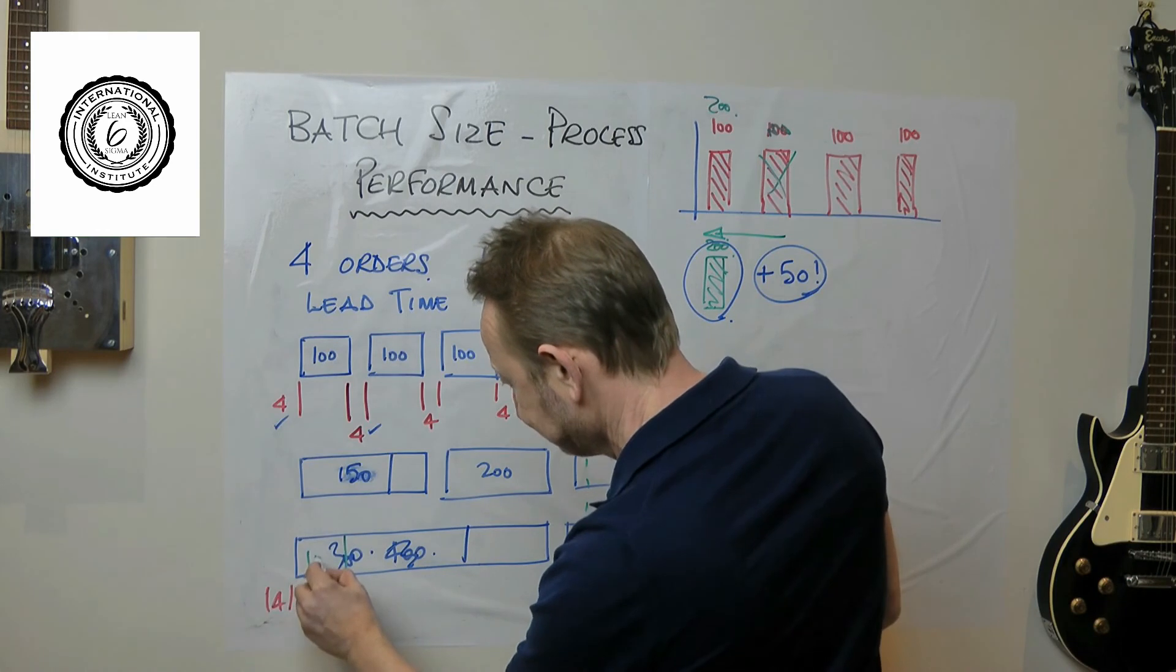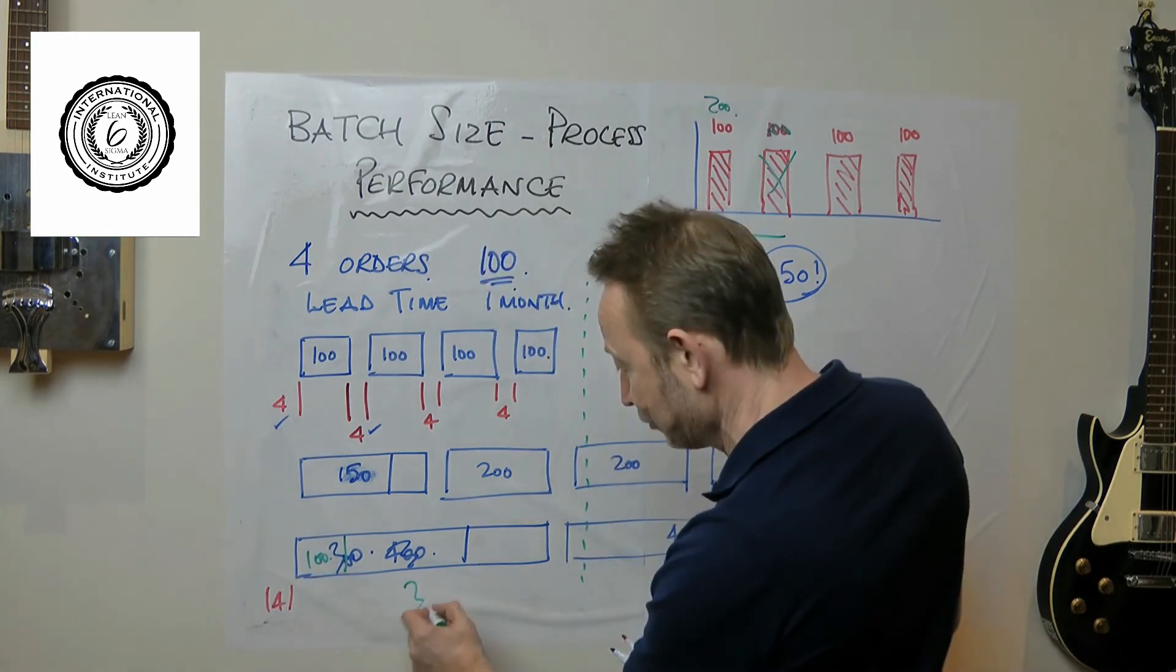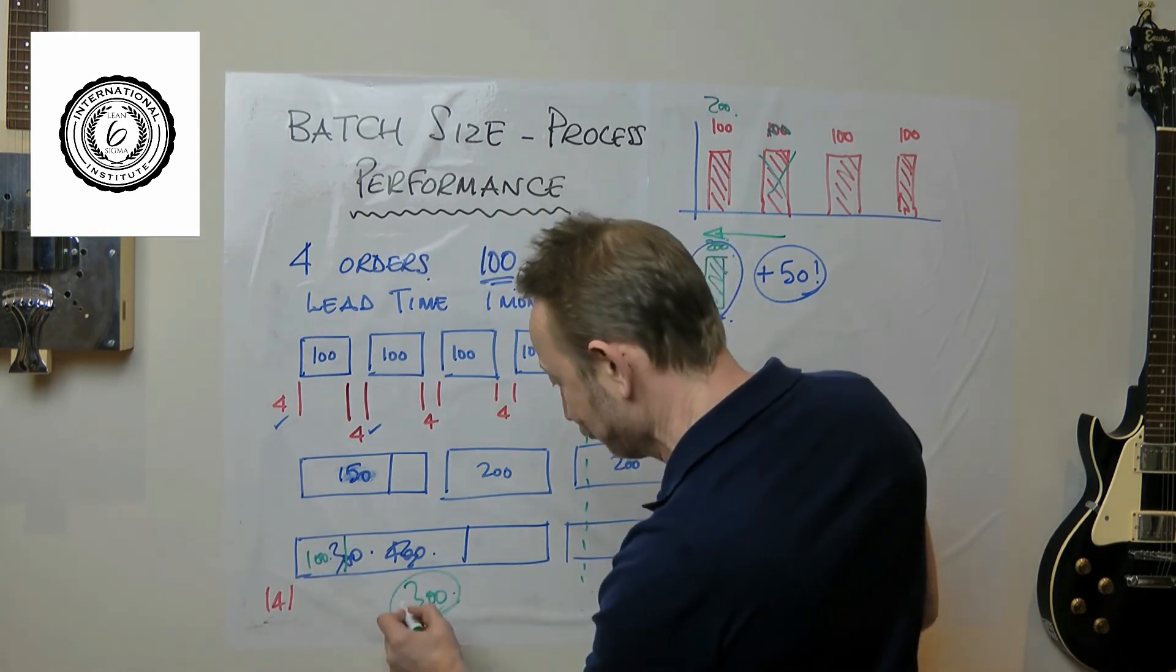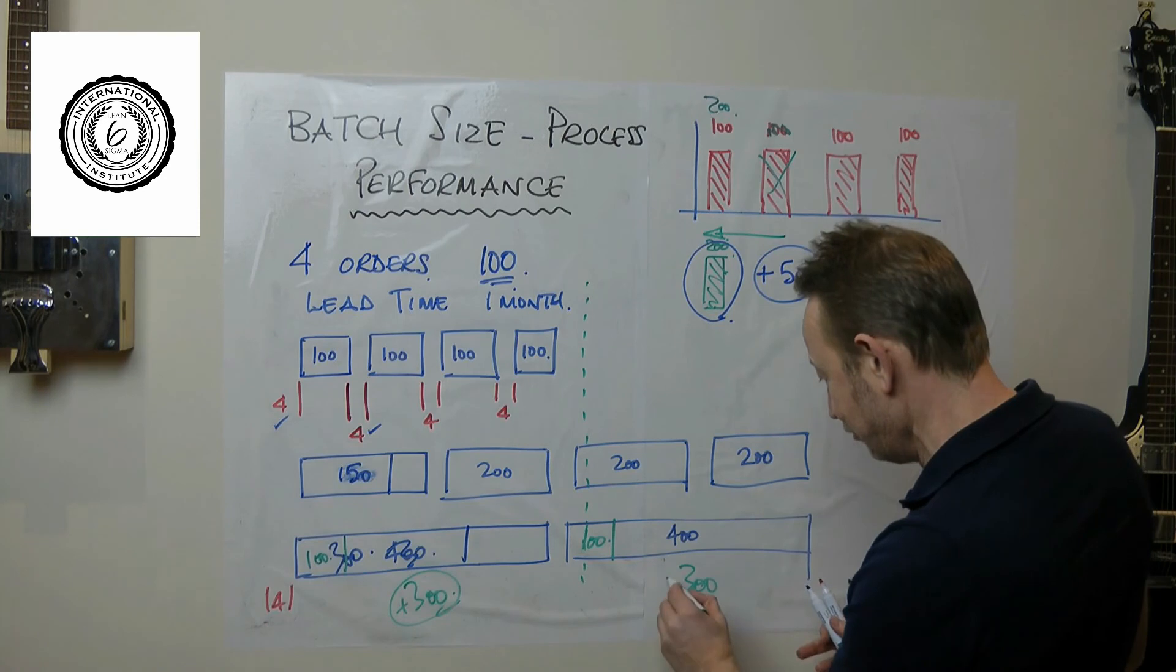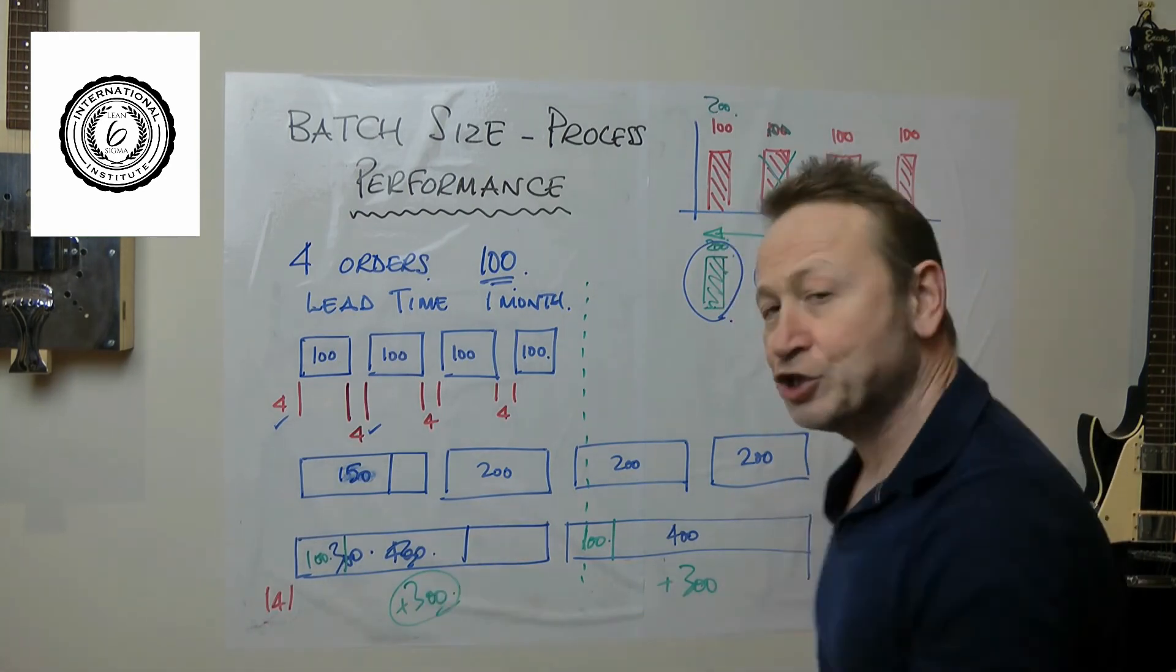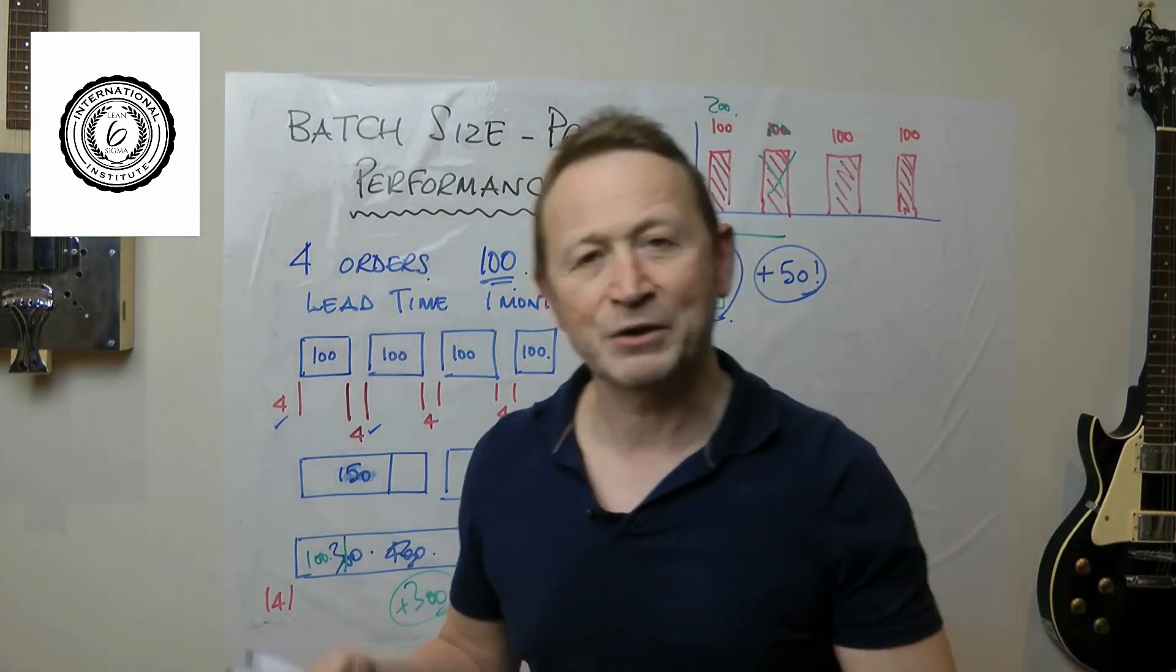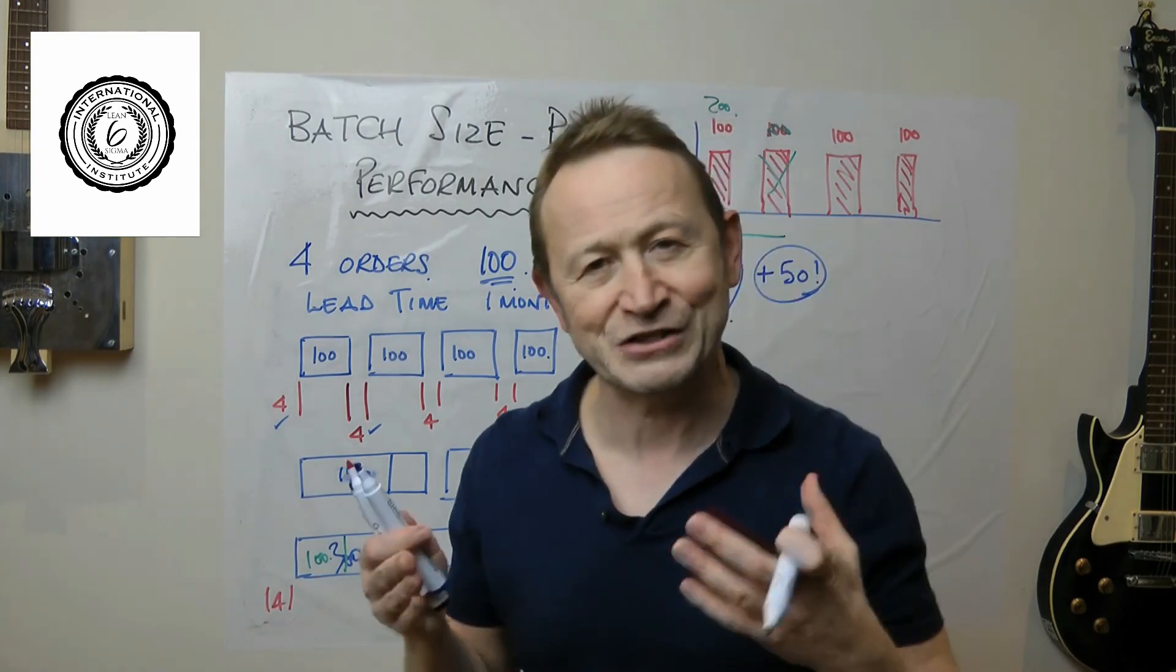And yet you've got stock of material everywhere, because of course you only needed 100 to satisfy the customer. You've got 300 here of this, you made the order for 100 there, you've got 300 of this. So you've got finished good stock everywhere but your on-time-in-full delivery is terrible.